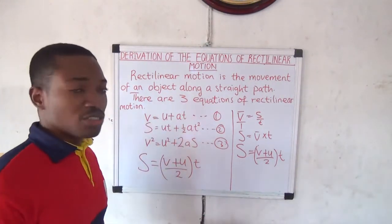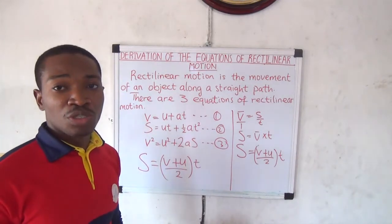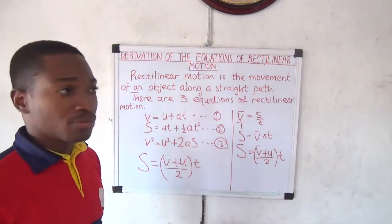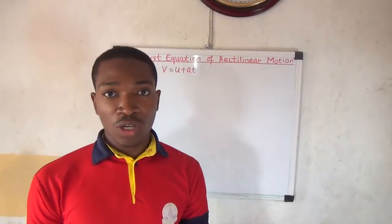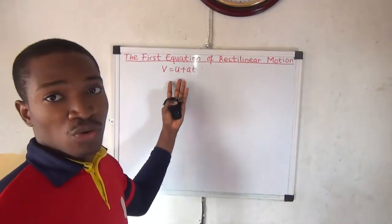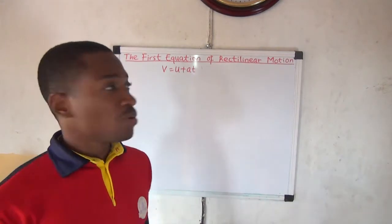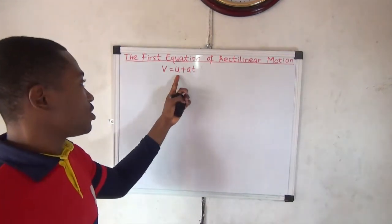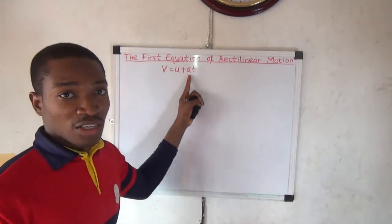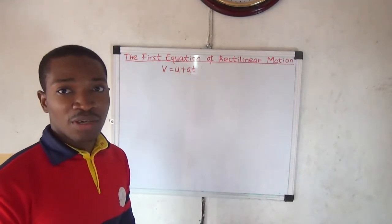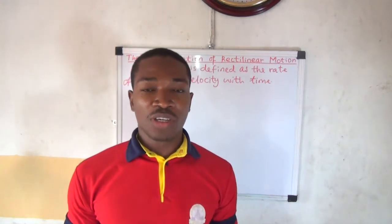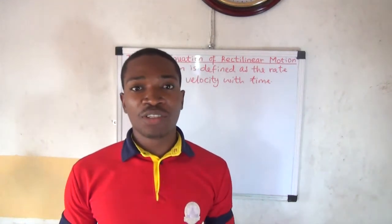The derivation of these three equations of rectilinear motion will be shown one after the other. The first equation is V equals U plus AT, where V is final velocity, U is initial velocity, A is acceleration, and T is time taken. The derivation comes from the definition of acceleration.